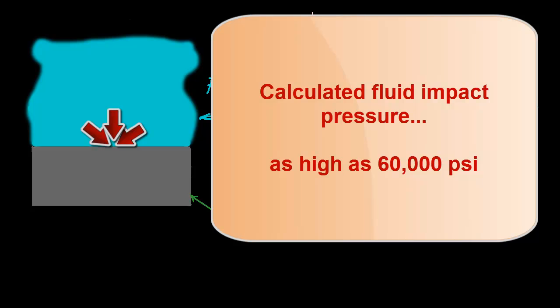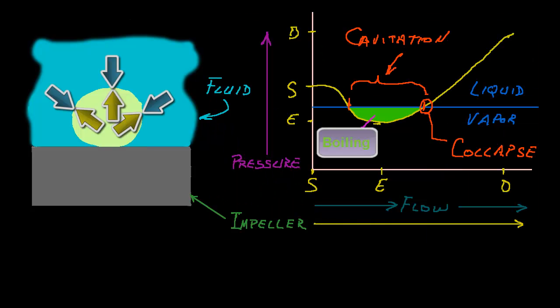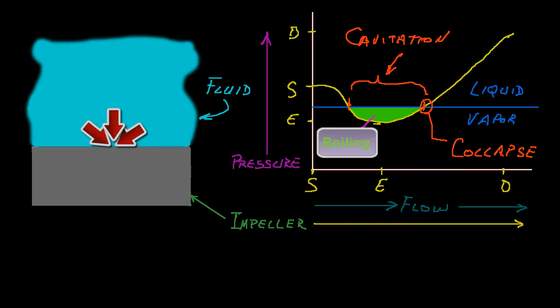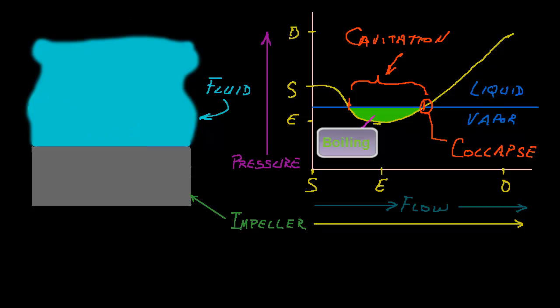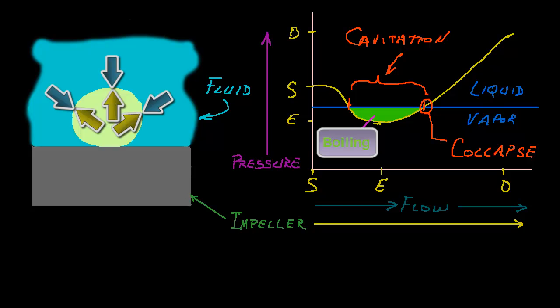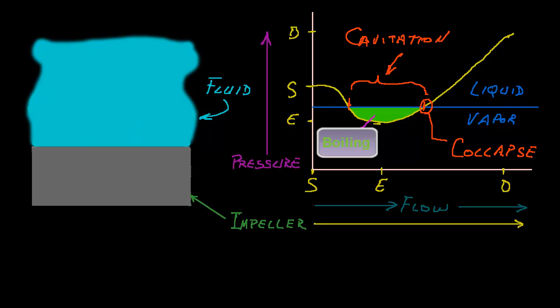Pressures in that range are capable of plastically deforming some metals. It is important to remember that this process is not a one-time, isolated event. Over time, the continual pounding of the fluid impact destroys the surface material at that location, and the resulting pitting in the surface of the part is known as cavitation damage.